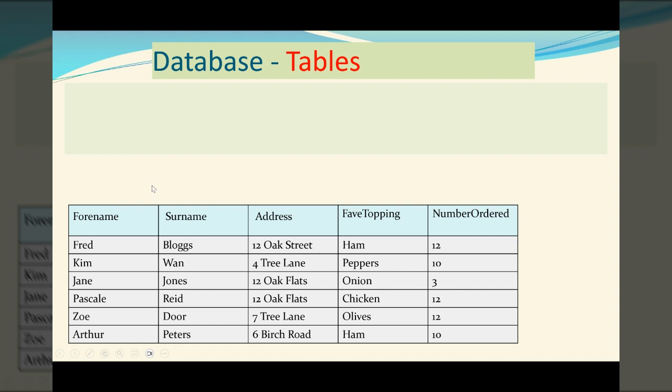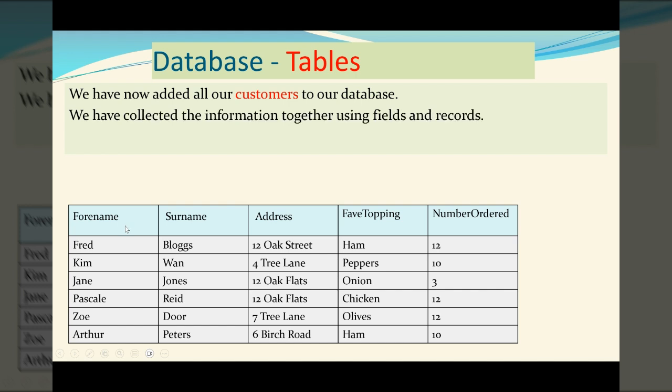Last of the three main keywords is tables. So we've added all our customers to our database. We've got our fields at the top, telling us what information is stored in each column. And those fields and records together create what we call a table.